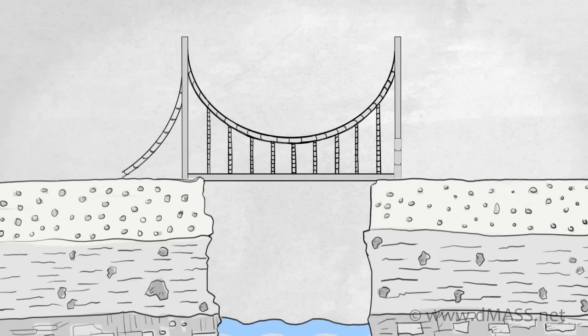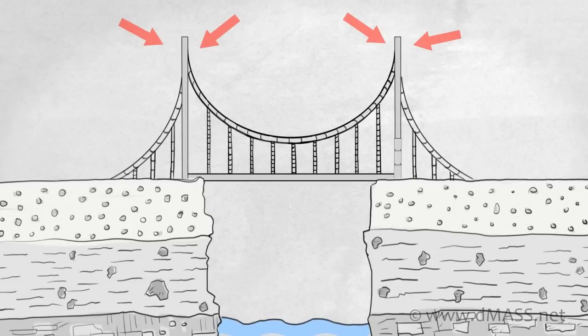So now you have a bridge where the only compression members, the only function being performed by iron or rock is two posts, one at either side. And the rest of it is all wires, flexible, bendable, movable wires.